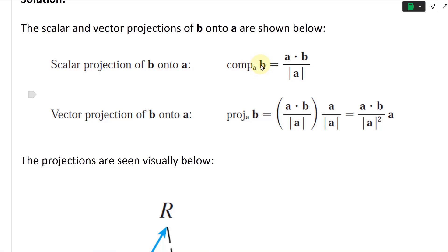Component of B onto A, that's the way you write it. So the component B equals A dot B divided by the length of A.